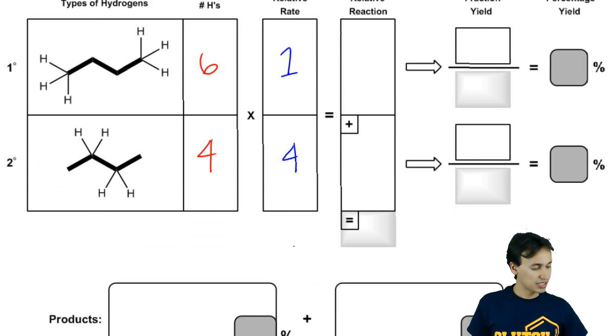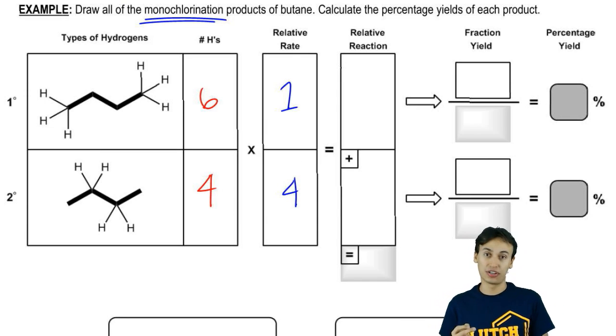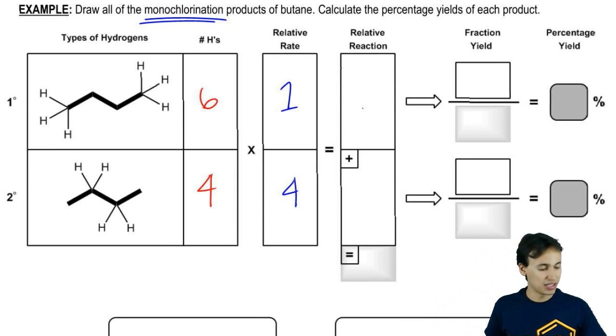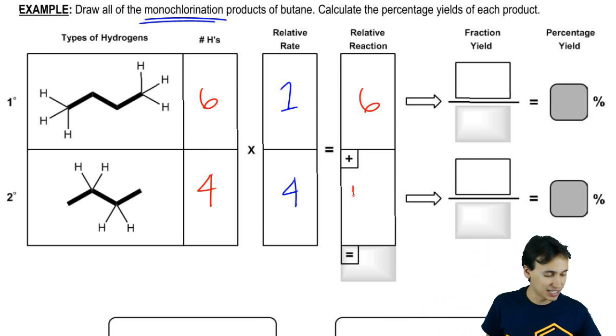So I have six at a rate of one, four at a rate of four. Now what I do is I multiply these numbers together. So what I'm going to get is six here. So six times one equals six. That's the relative reaction. And then four times four is 16.